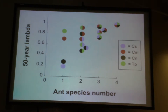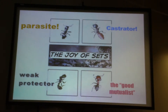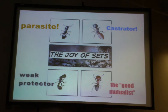If we look at the whole community in general, what we find is that as we add more species — even though it's with a really motley crew of associates — we tend to get increases in tree population growth rate over a generation of time. Sets of these mutualists promote greater plant population growth rates than individuals on their own, despite the fact that one is a parasite, one's a castrator, one's a weak protector, and there's only one quote 'good mutualist.'